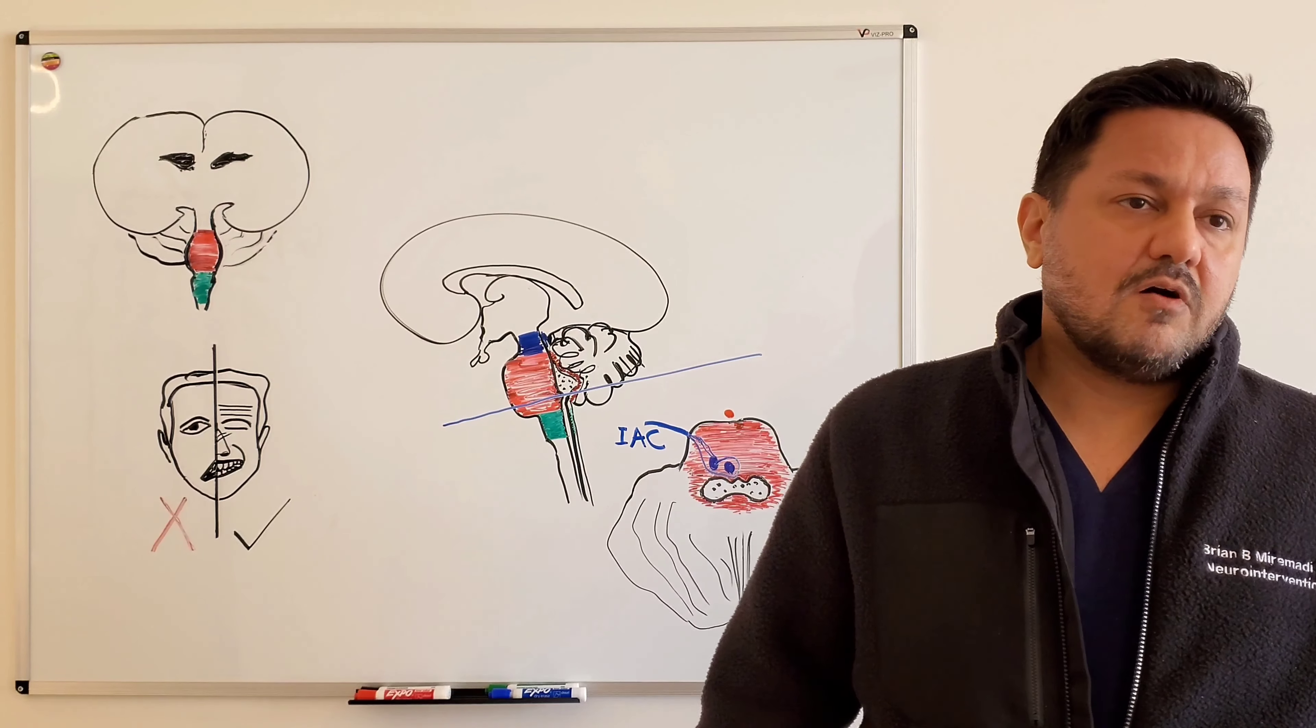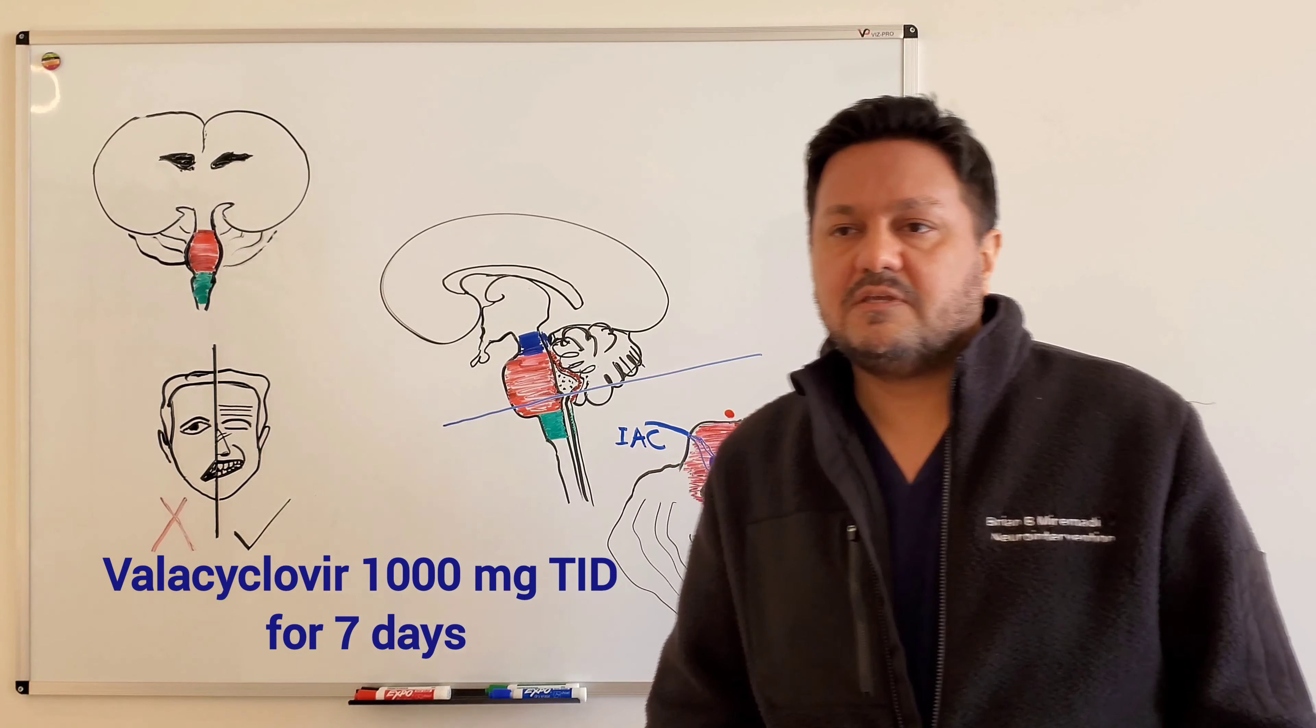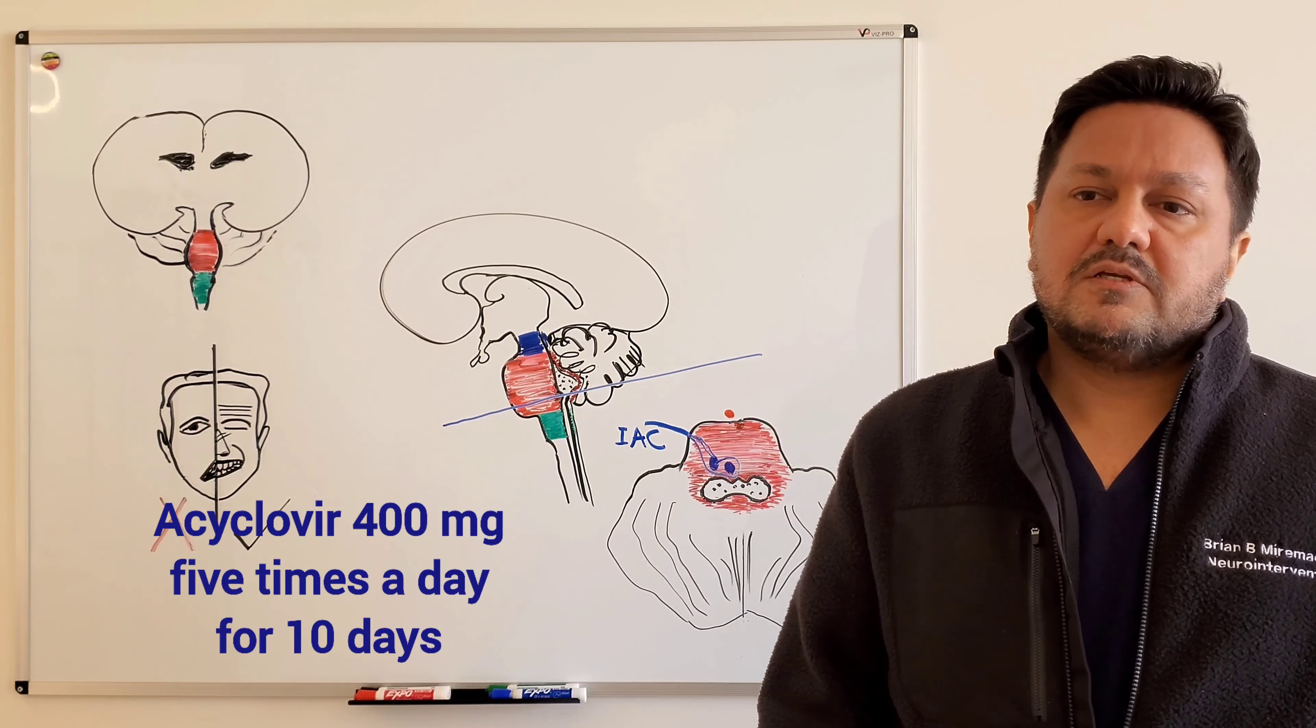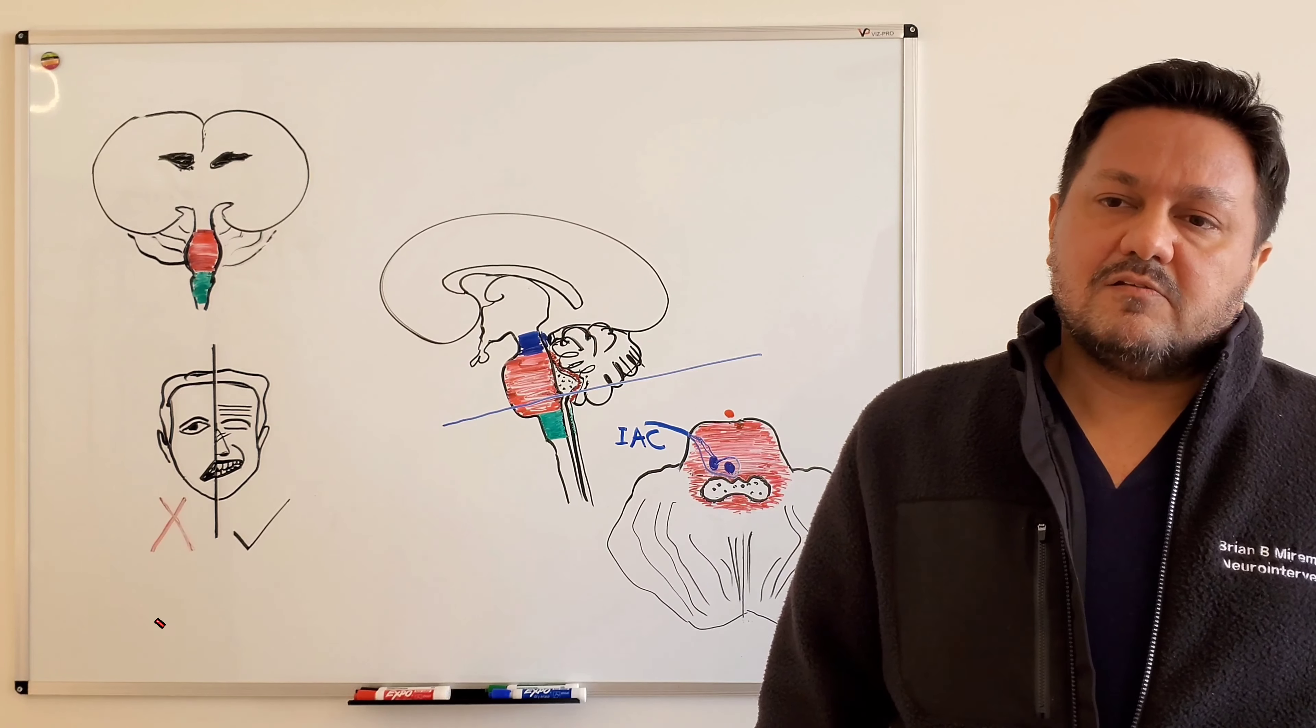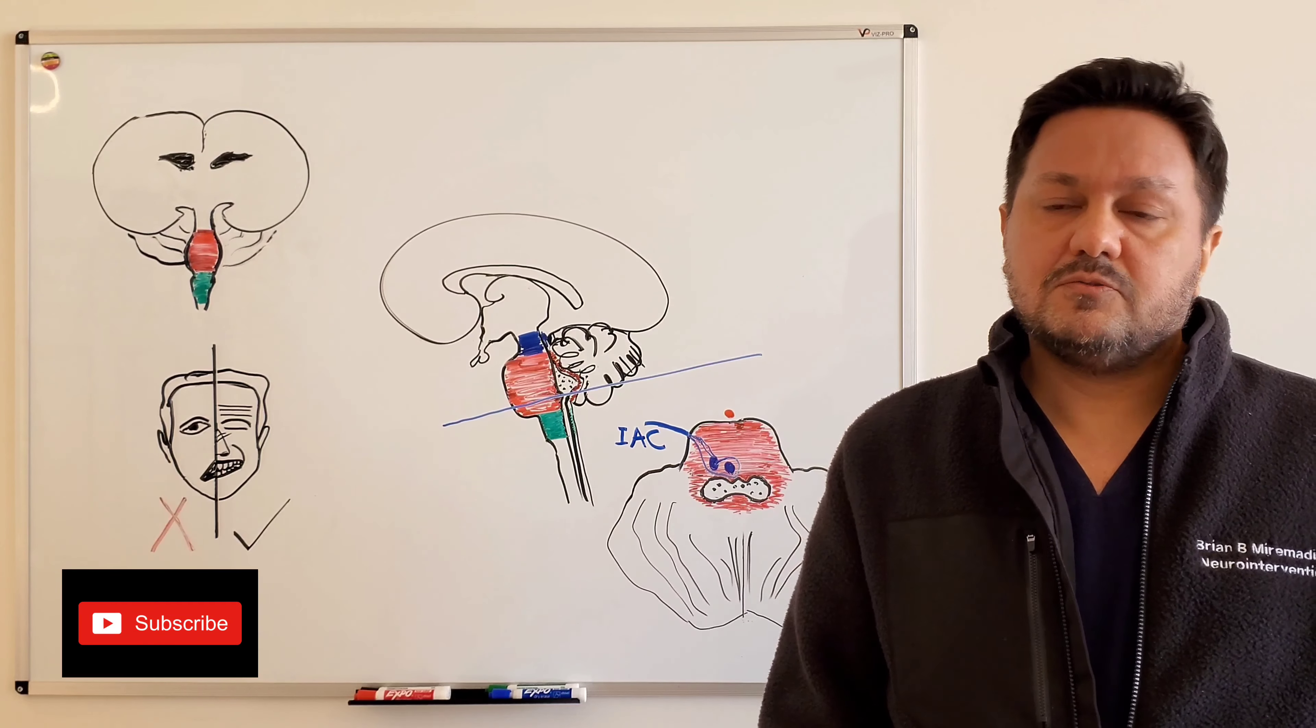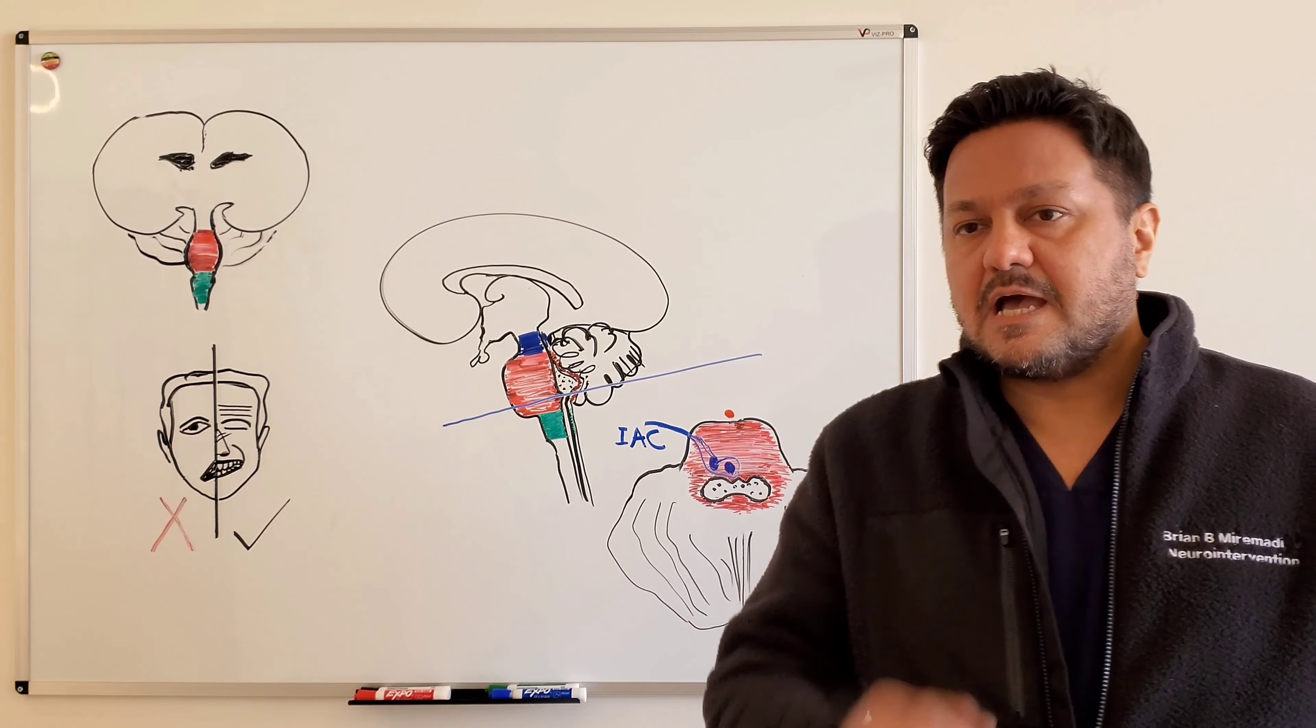The choice of antiviral medication in this case is valacyclovir at a dose of 1000 milligrams three times a day for one week. Alternative to that is acyclovir at a dose of 400 milligrams five times a day for 10 days. Valacyclovir is preferred because it's more convenient and has higher bioavailability compared to acyclovir. You want to make sure you adjust the dose based on your patient's kidney function.